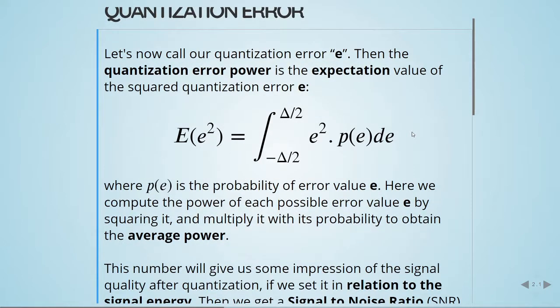Here we have p(e), which is the probability of the error value e. We compute the power of each possible error value e by squaring it and multiplying it with its probability to obtain the average power.